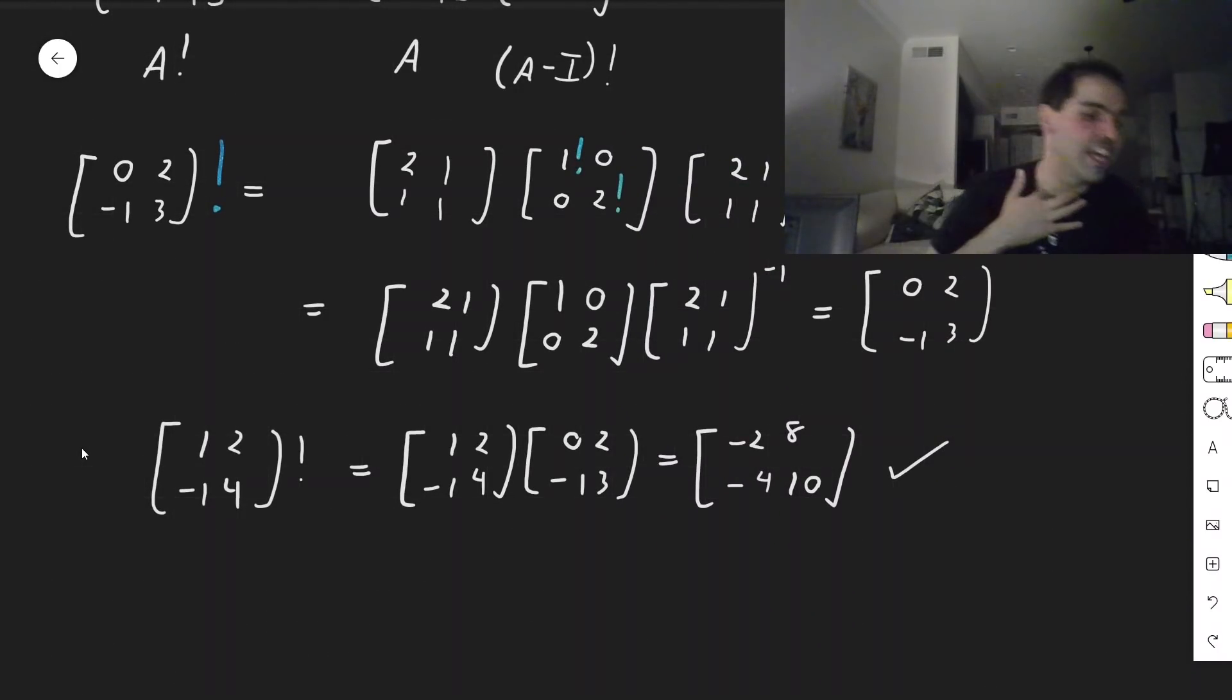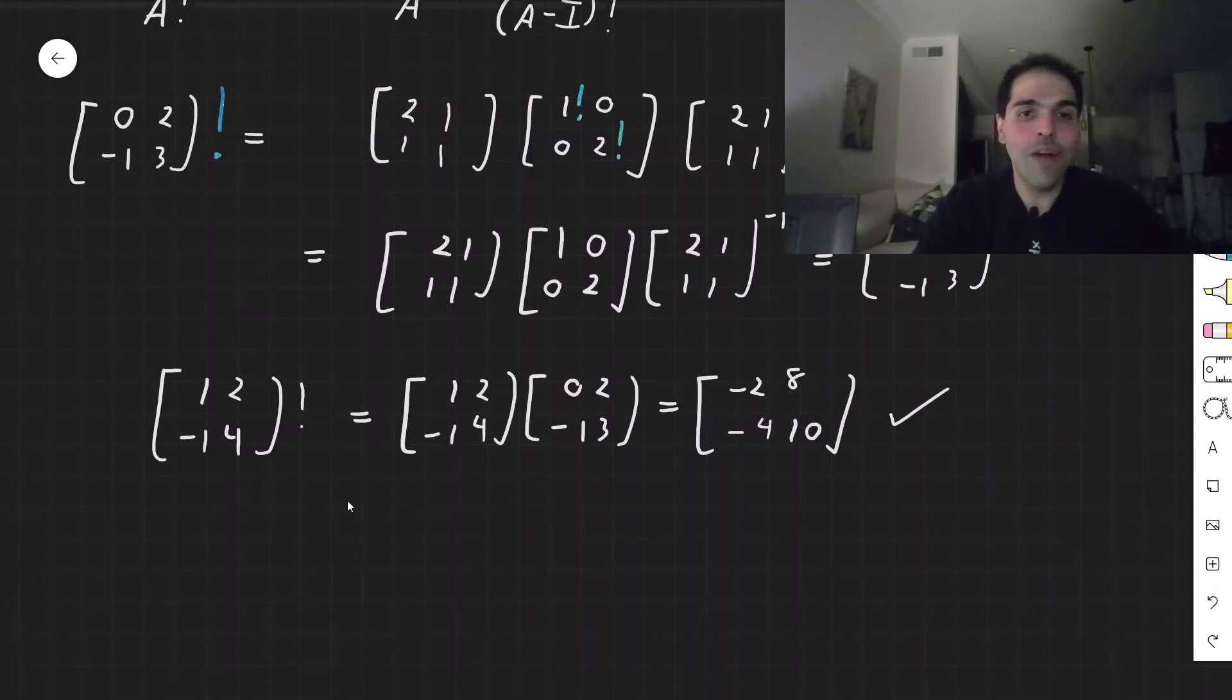And you know, this is kind of general method. If it's diagonalizable, put the factorial on the diagonal entries. If it's not, use the Jordan canonical form. But there is one little thing that you might still probably think about because here, well, we could put factorials because the eigenvalues were natural numbers. What if the eigenvalues are real numbers or maybe even negative real numbers?